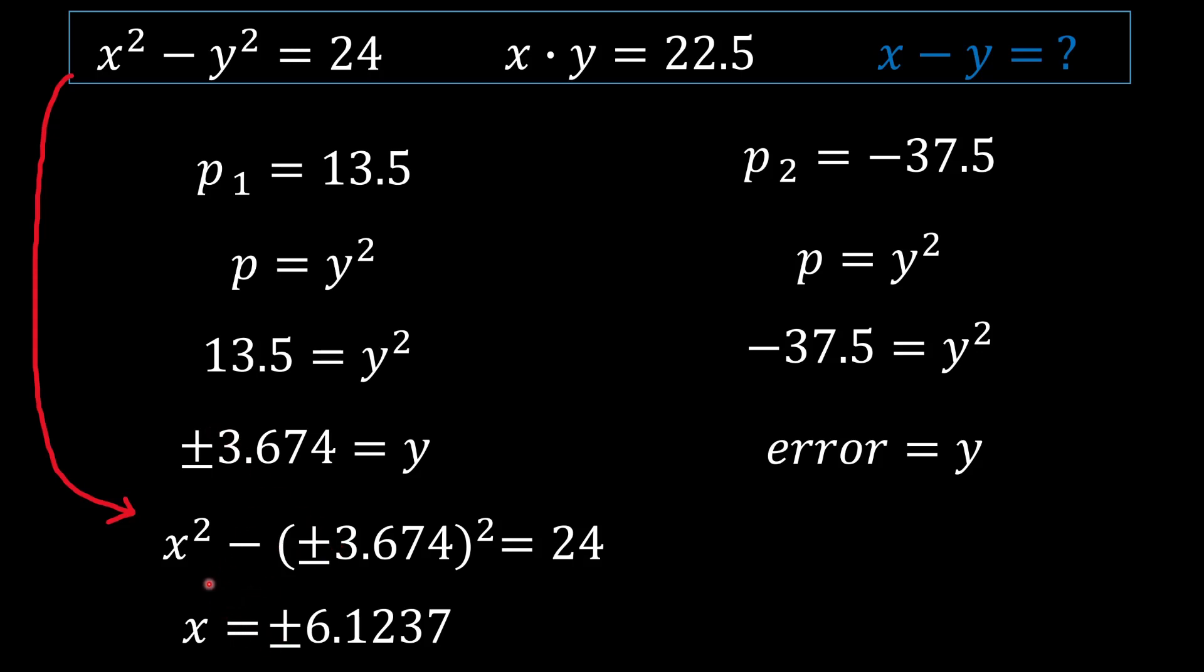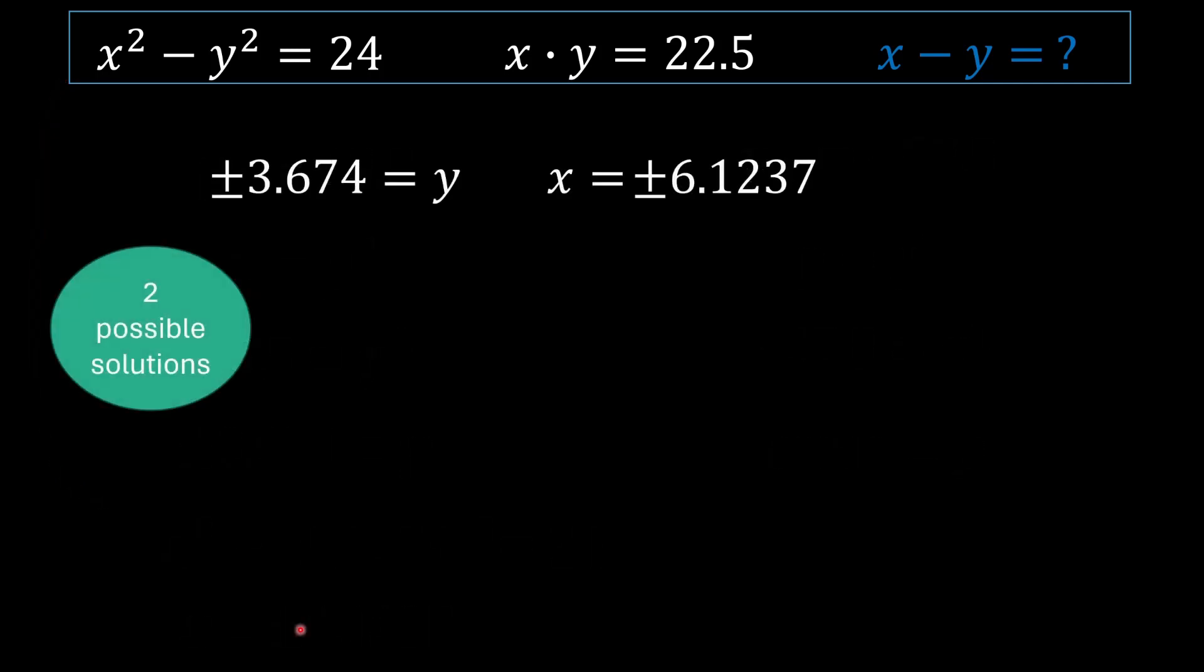And using these two solutions, we can solve for our x term. And, you know, if you put plus or you put minus, you guys are going to obtain plus or minus 6.1237 as your x term. So you're going to have two solutions as your x because you've got two y's, basically.